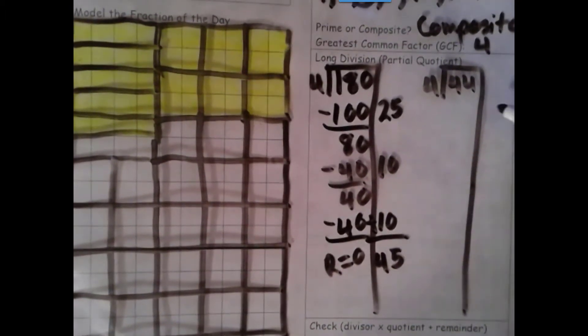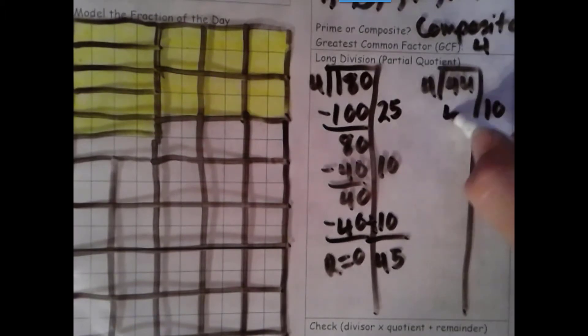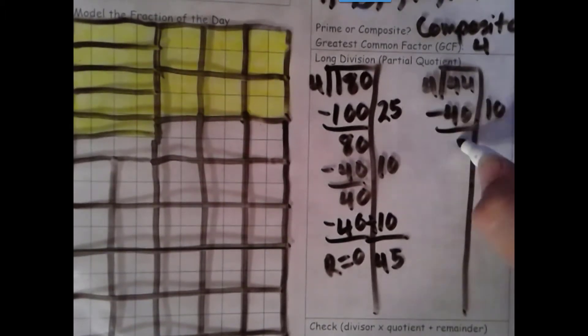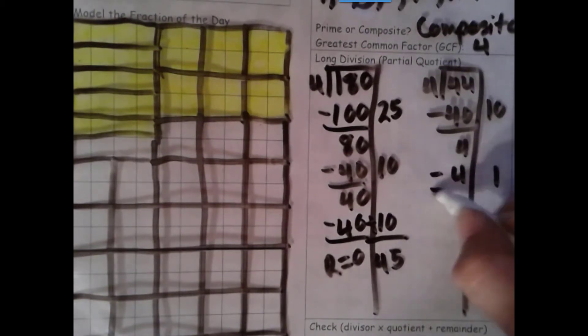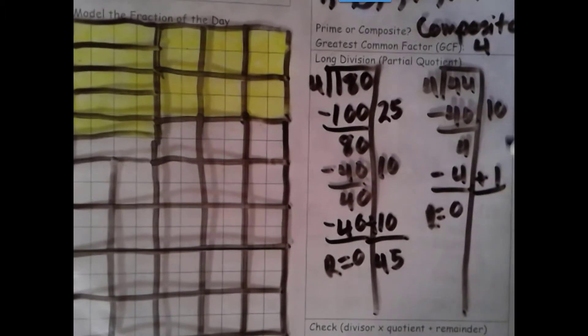Here, 4 times 10 is 40. More on top, no need to stop. 1 times 4 is 4. Number's the same, zero's the game. Add these together, I get 11.